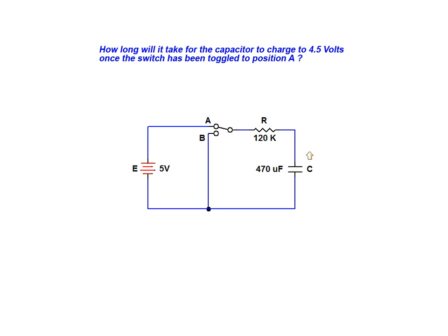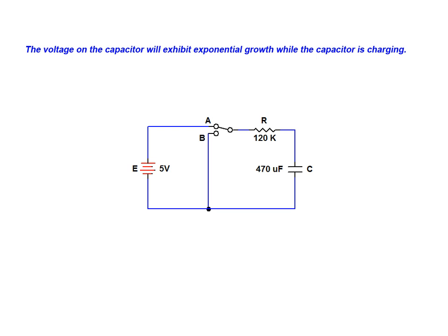Once the switch is in position A, the capacitor begins charging and will reach a steady state value of 5 volts. The voltage across the plates will exhibit exponential growth while the capacitor is charging.